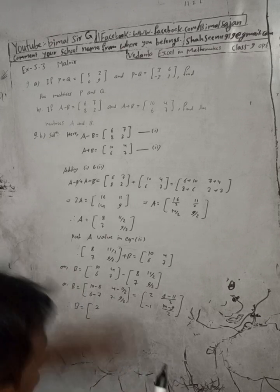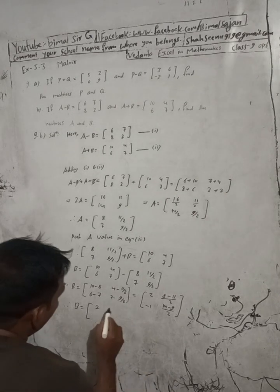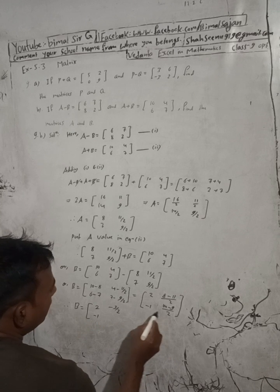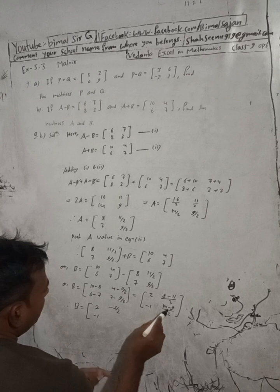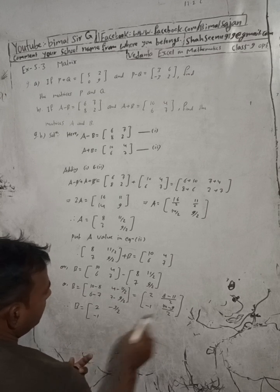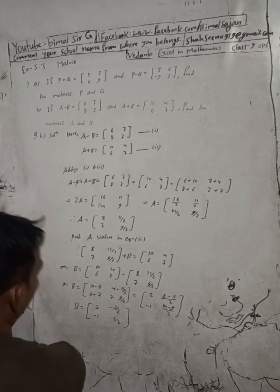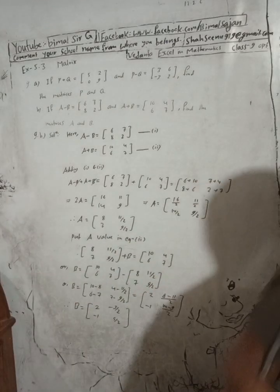So the final answers are: P equals [4, 4; minus 3 by 2, 11 by 2] and Q equals [1, minus 2; 3 by 2, 7 by 2]. See you in the next video. Jay Sri Krishna, Bambam Bholi, Har Har Mahadev.